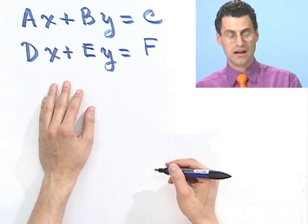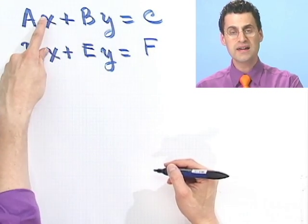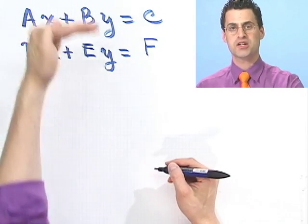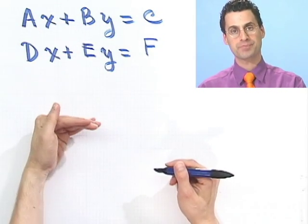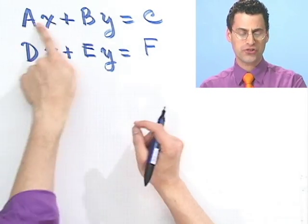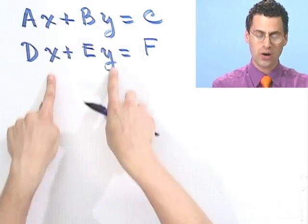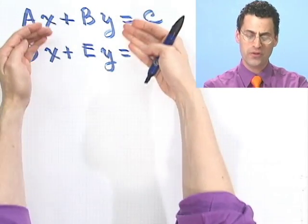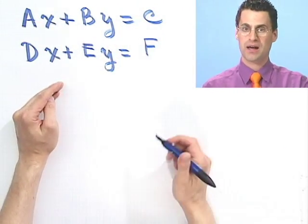And what I'd like to do is find out those values for x and y that actually satisfy both of these equations at the same time. So it's no longer a question of just solving an equation because now I have two equations with two unknown variables, and I want to find out when both of these are satisfied at the same time.